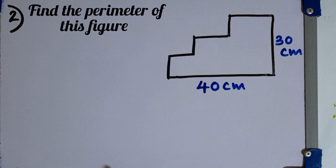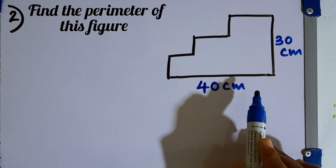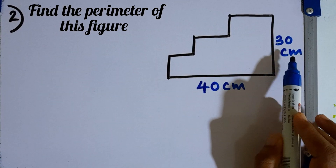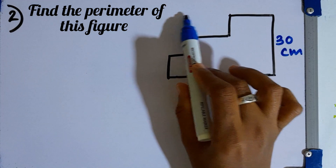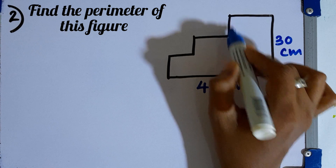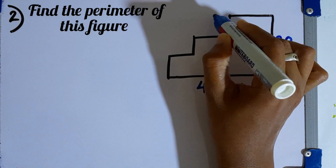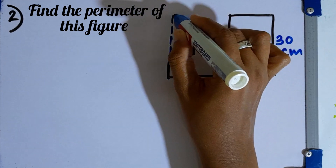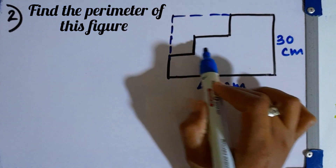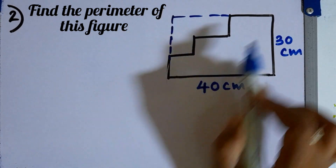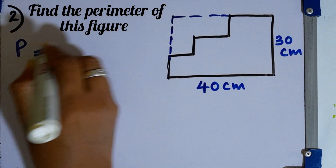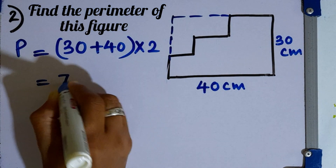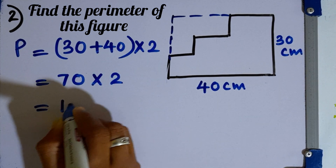Question number 2. Find the perimeter of this figure. The length of this figure is 40 cm and the breadth is 30 cm. We can complete a rectangle by stretching the sides. This length is also equal to 40 cm and this length is 30 cm. So, perimeter equals 2 times (30 plus 40), which is 2 times 70, giving a perimeter of 140 cm.